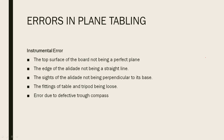The height of the board is not perpendicular to its base — that is also an error. The fitting is also a source of error. The tripod and the table are also a source of error. The trough compass is also a source of error. You can check the compass and verify it. The pocketless steel axis is also an error. These are instrumental errors.